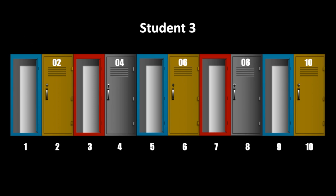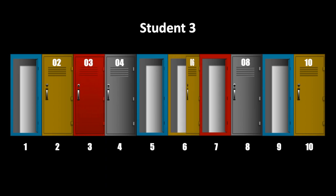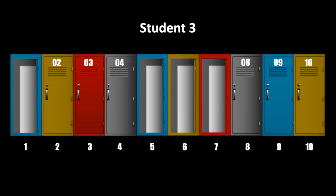Now it's time for the third student to go. He goes to the third locker and closes it, then the sixth locker and opens it, then the ninth locker and closes it. Notice he skips the first, like we said before, but now he also skips the second, just like every subsequent student will. So the second locker will stay forever closed.